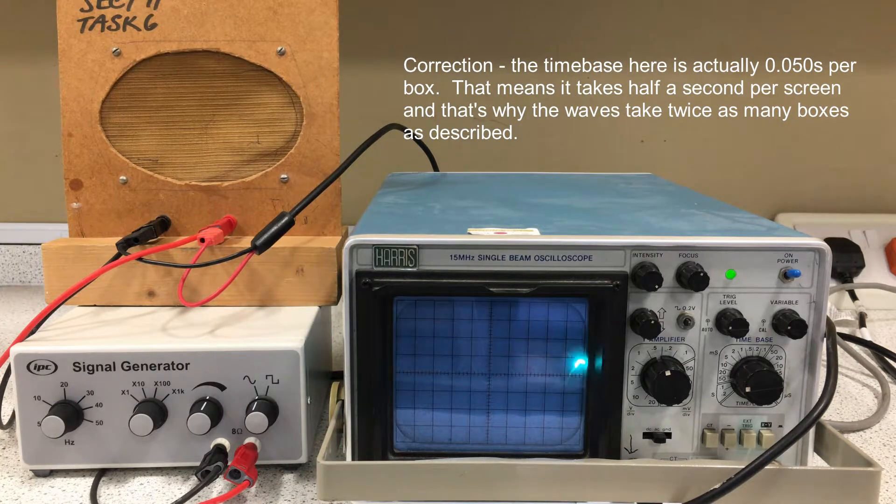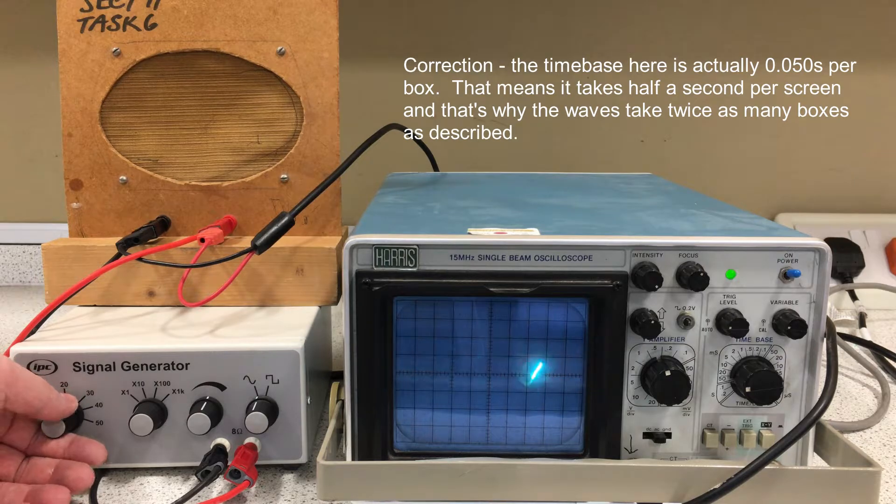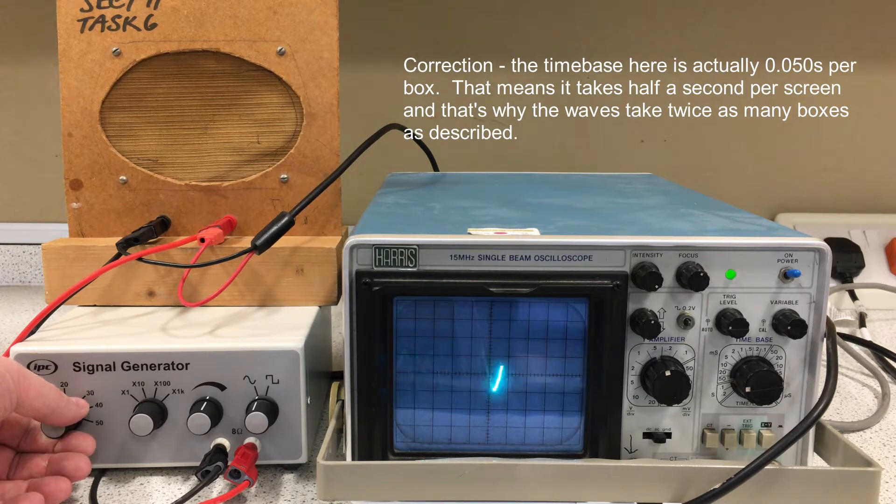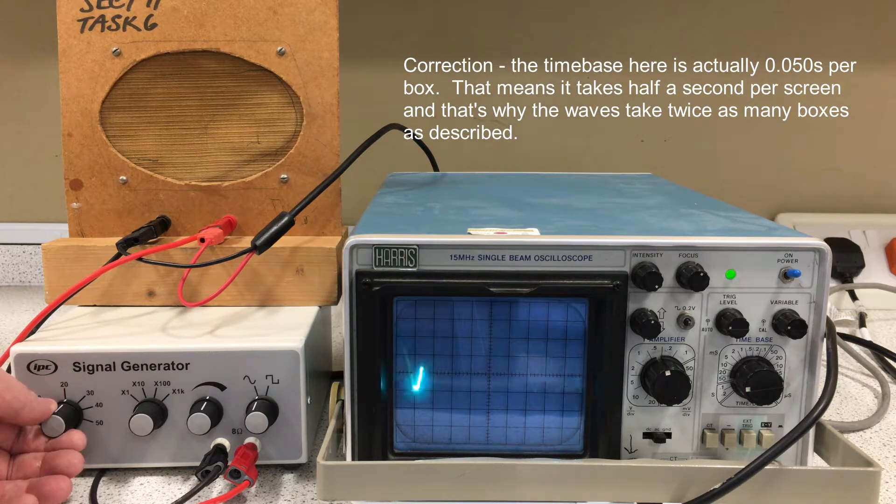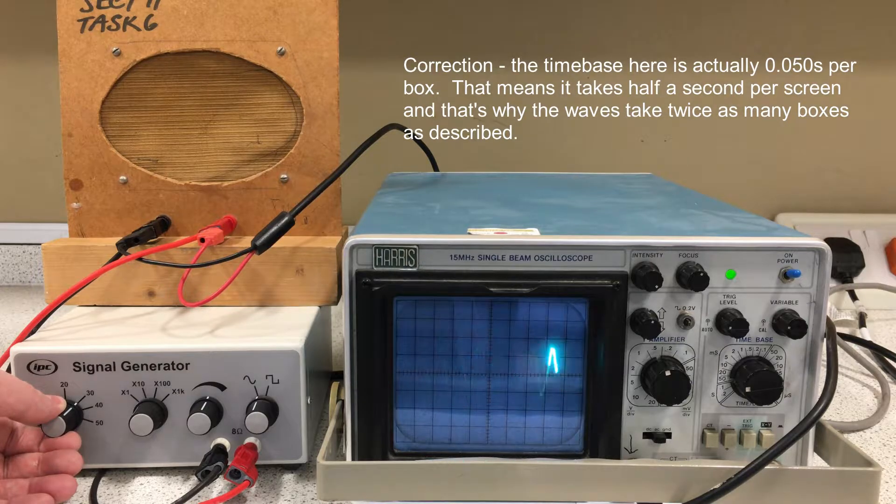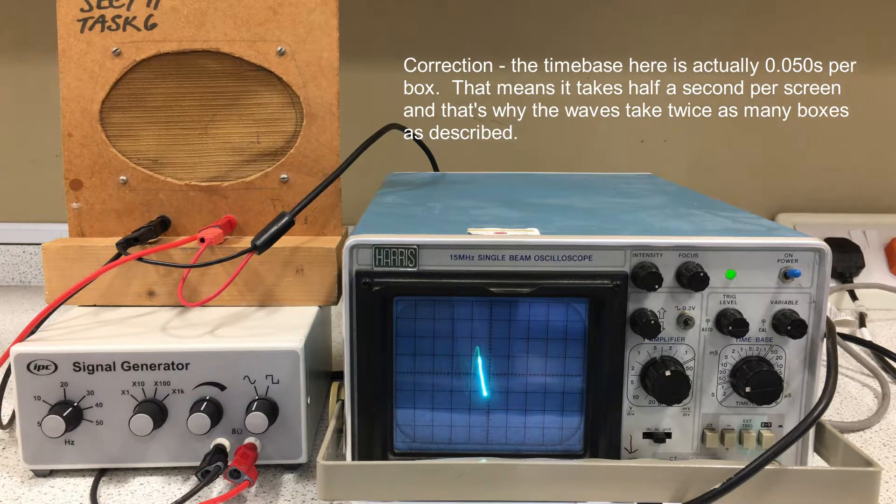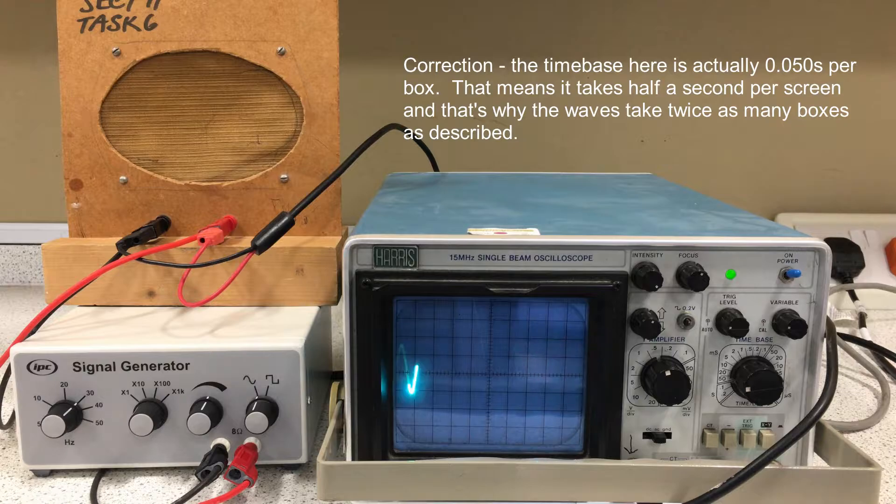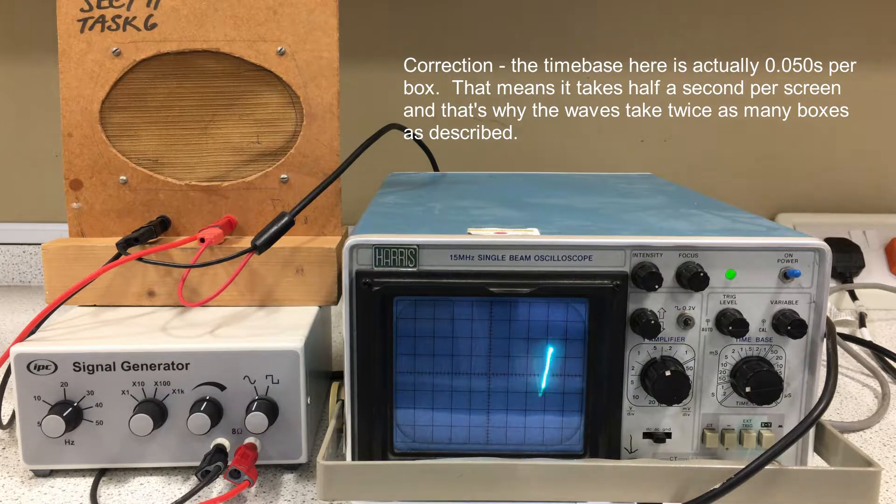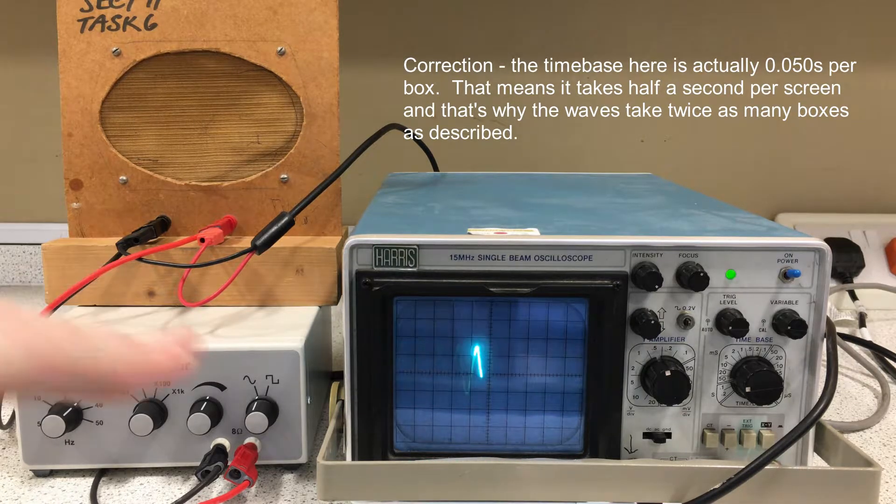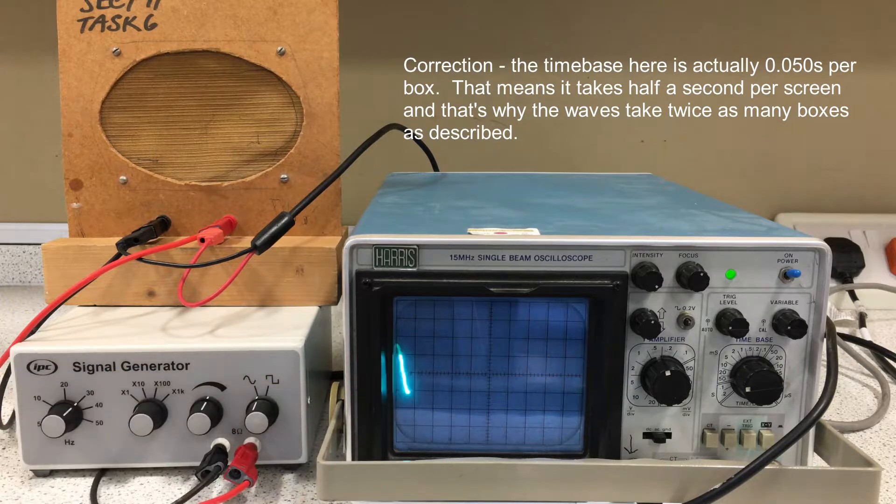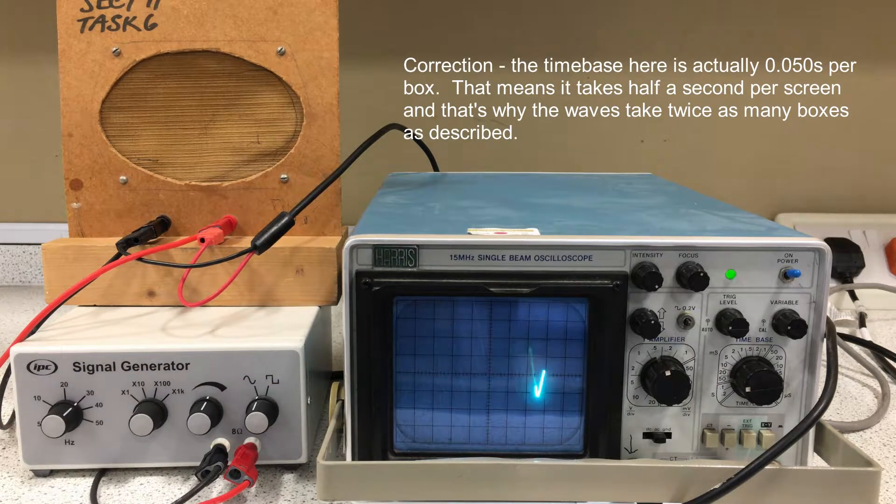I'm now going to increase the frequency to 20 and then to 30 Hz. You might be able to hear that the speaker is now starting to produce audible sound. We can also see on the signal generator that we're getting three waves per box.